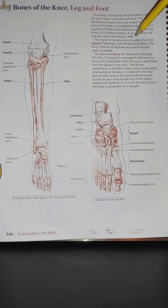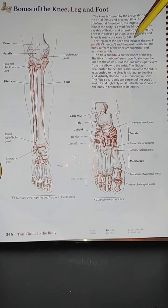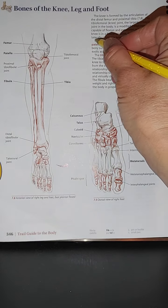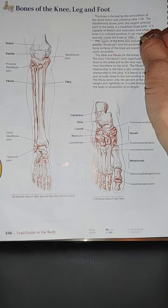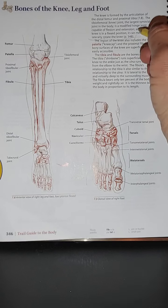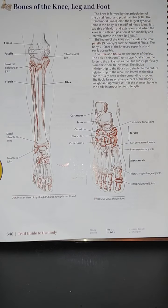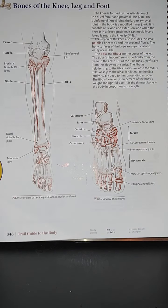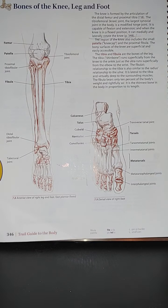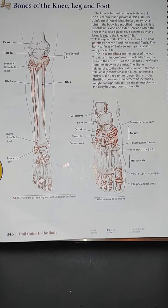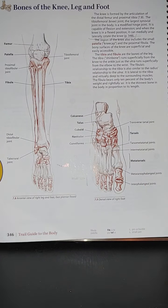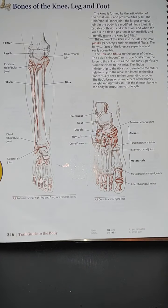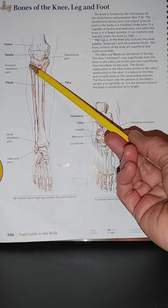laterally rotate. Once the knee is in a flexed position, it can rotate. The region of the knee also includes the small patella, which is the kneecap, and the proximal fibula.